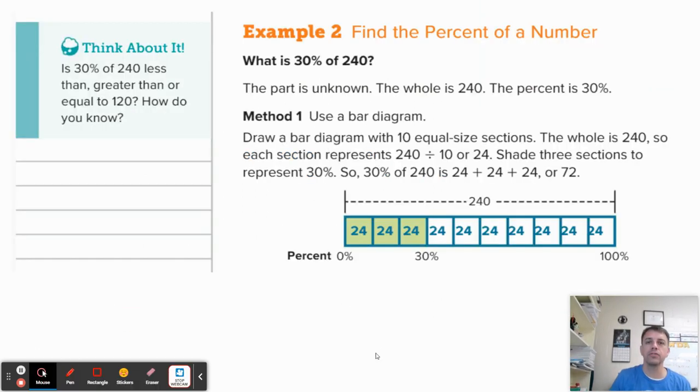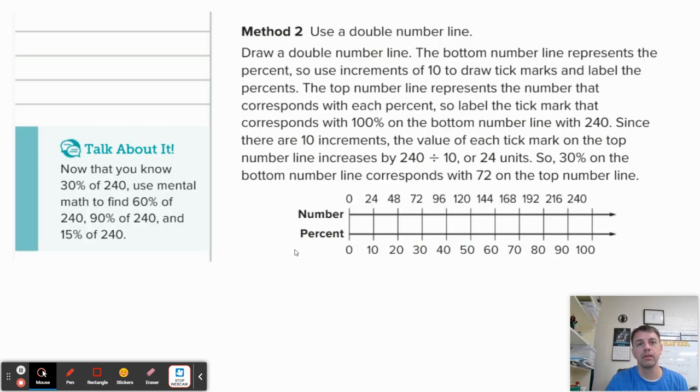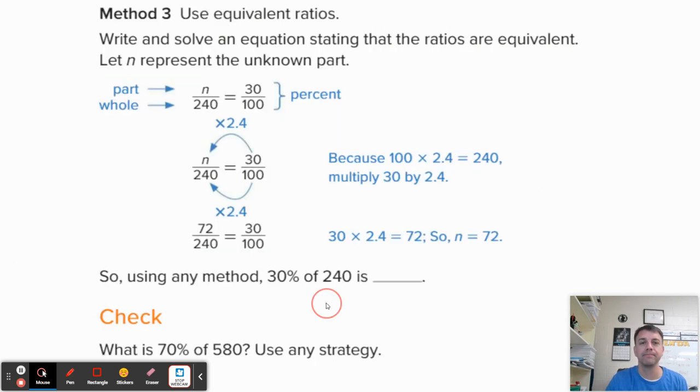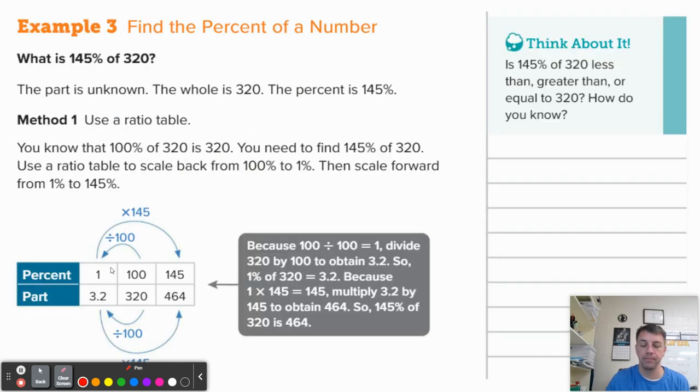Let's take a look at another example. So find the percent of a number. Again, same kind of problem. What is the percent? So what is 30% of 240? You could use the bar diagram. That is an option. We could use a double number line. That is another option, but notice you're going to have to scale back to scale forward. And we could also use my favorite method, which is equivalent ratios. Here's where I will camp out every single time, because I think this is the fastest and easiest way to solve the problem. So I want to go over this one with you. So again, notice this is the same kind of setup as last time.